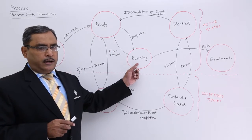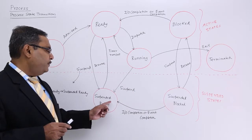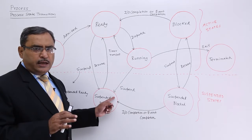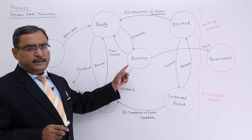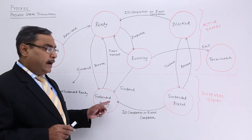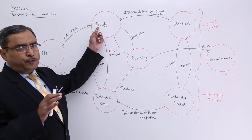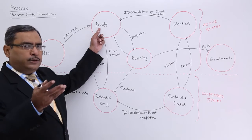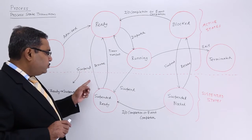During the running state, a suspend may also take place — the process may get suspended and find itself in the suspended ready state. If a process cannot execute after a certain time and the clock confirms that time has been reached, the process gets suspended into suspended ready. When a favorable event occurs, the process resumes back to the ready state. Similarly, from the ready state, the process may also go to suspended ready, giving two transitions: suspend and resume.